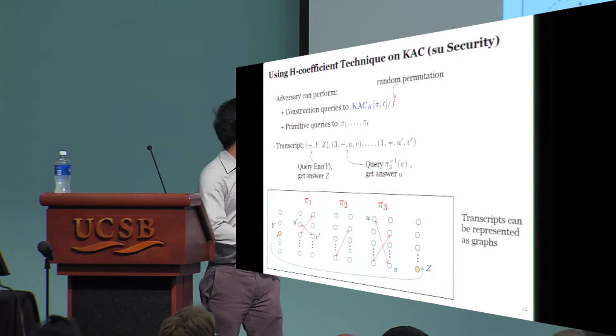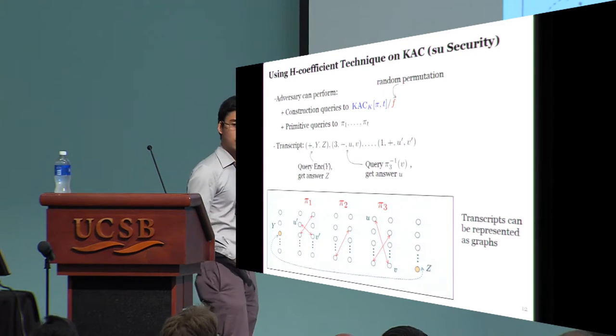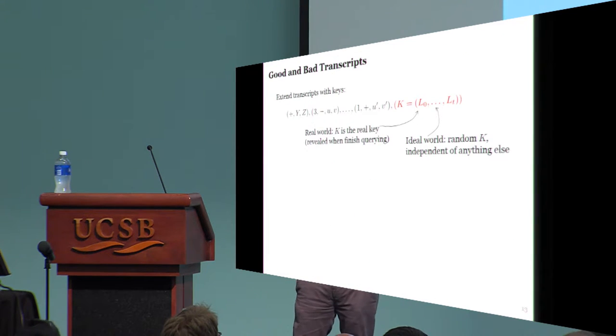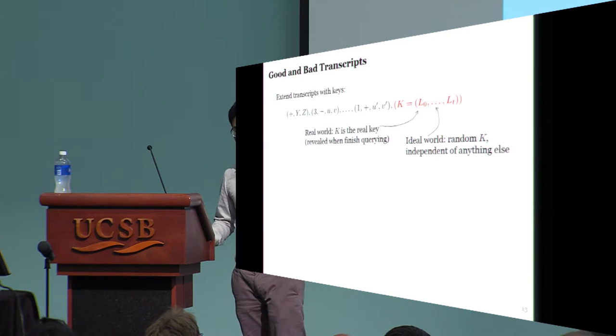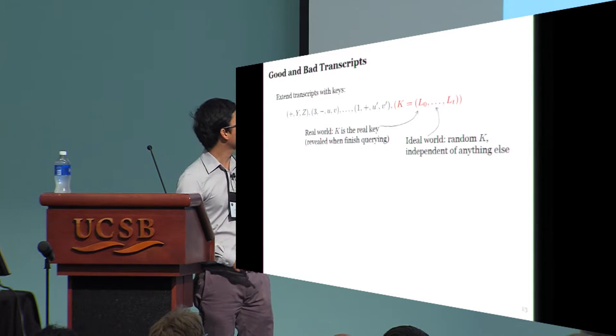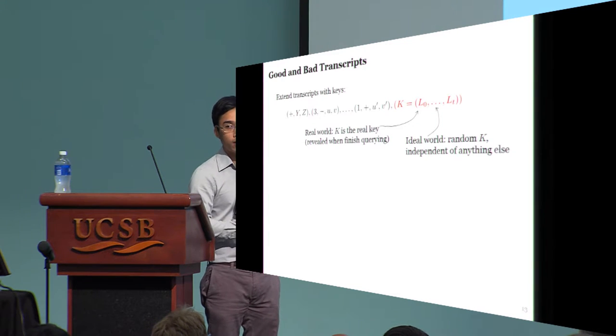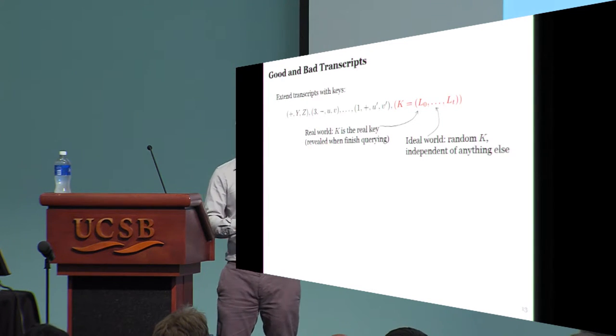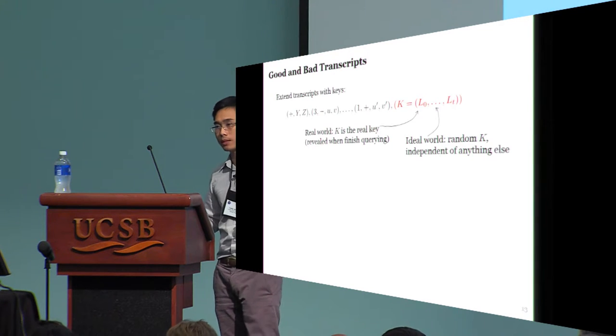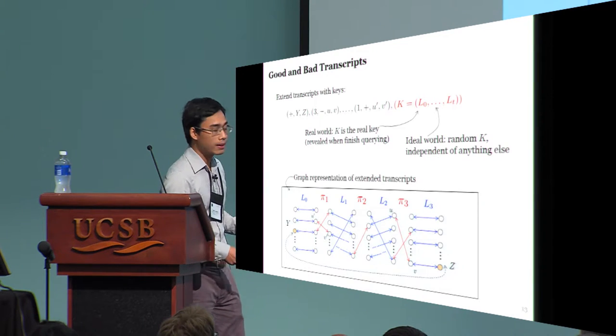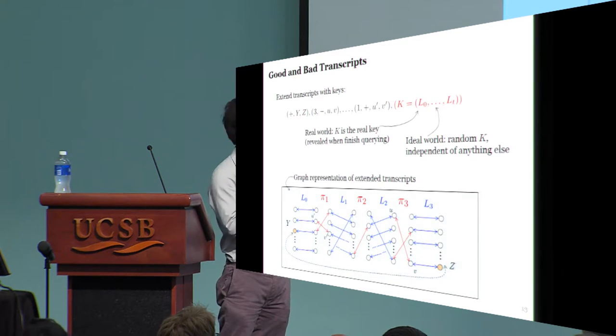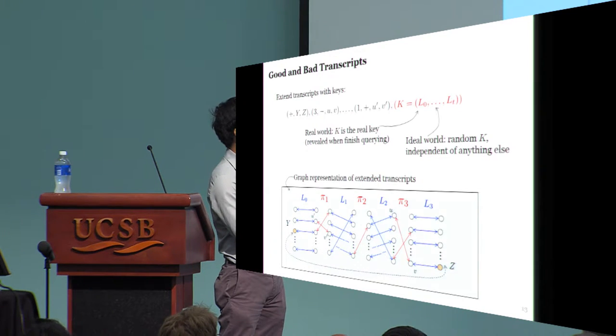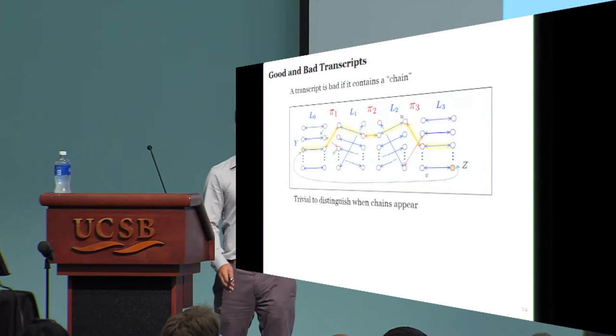Pictorially, one can represent a transcript by a graph like this. Now, to determine if a transcript is good or bad, when the adversary finishes querying, we'll give it a key and extend the transcript with that key. In the real world, that key is exactly the real key for the block cipher. In the ideal world, the key is just some random string independent of anything else. This extended transcript can again be represented by a graph. For example, here the graph tells us that if you XOR the subkey L3 to the string v, then you get a string z.